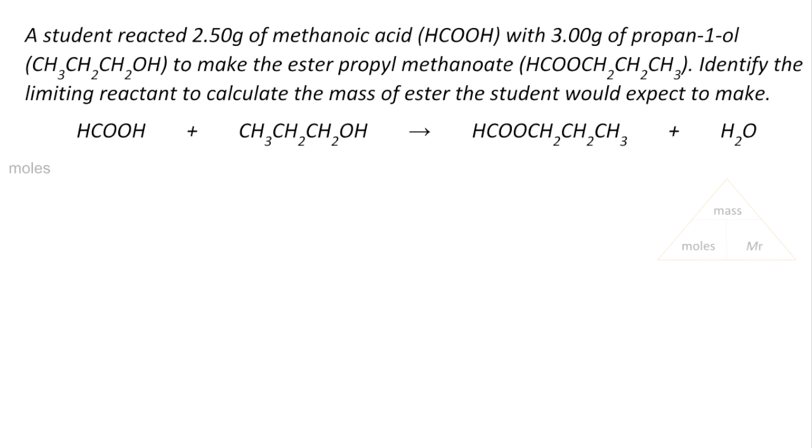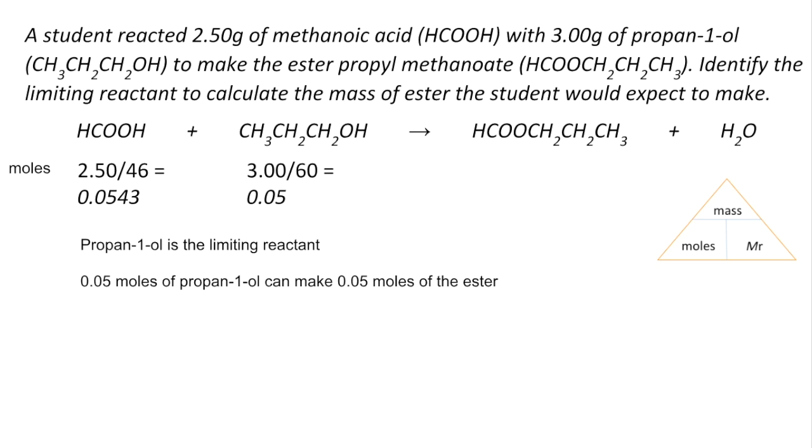So starting with moles the moles of the methanoic acid mass over MR 0.0543 and the moles of propan-1-ol again mass over MR 0.05 so you can see that the propan-1-ol is the limiting reactant just and that's going to limit the moles of ester formed to 0.05 as well. So all we need to do now is convert those moles of ester into mass and so we multiply by the MR of 88 and we get 4.4 grams.